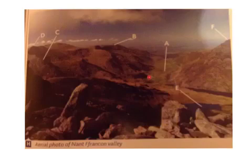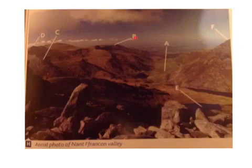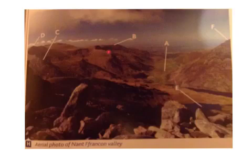So you can see the U-shaped valley, and running in that valley is what we call a misfit stream — you can just make that out there. Landform B, up here, is a hollow within the mountainside with a steep back wall; this is going to be a Corrie, which would have had a glacier in it that fed into the main valley.